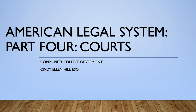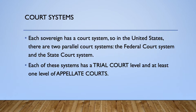This is part four of the American Legal System PowerPoint audio lecture series, and this edition is in regards to court systems. Every sovereign has a court system, so in the United States there are two parallel court systems: the federal court system and the state court system. Each of these systems has a trial court level and at least one level of appellate courts. You can be sued or charged with a crime in both the federal and state court systems regarding the same subject matter.